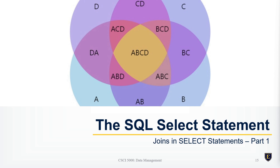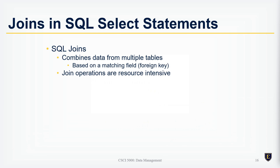In this video we are going to begin talking about how to connect tables that have related data together, using SELECT statement join operations. SQL joins combine data from multiple tables. This is very similar to the concept used in Microsoft Excel where you were looking up values from a second worksheet and using those values in your own worksheet, but here we're combining data from multiple tables based on a matching field — the foreign key.